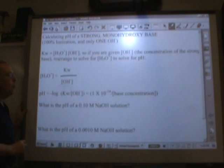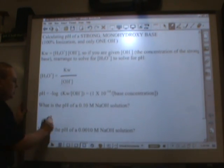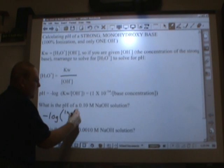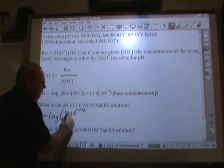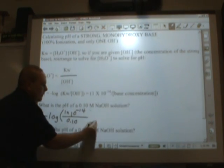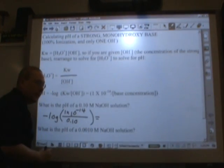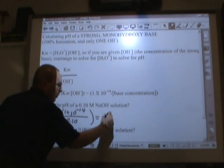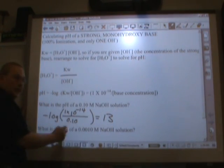So the pH of a 0.1 molar NaOH solution would be the negative log of, you take 1 times 10 to the negative 14th, divided by the molarity, which is 0.10, and this will give you a pH of 13, two sig figs.